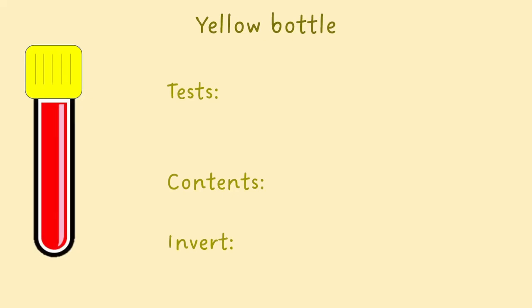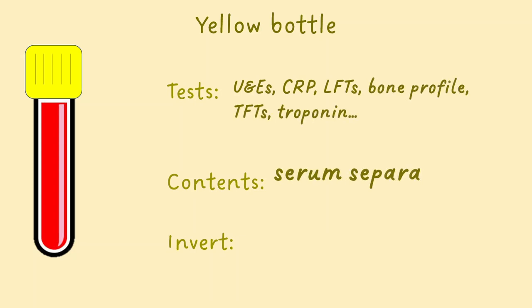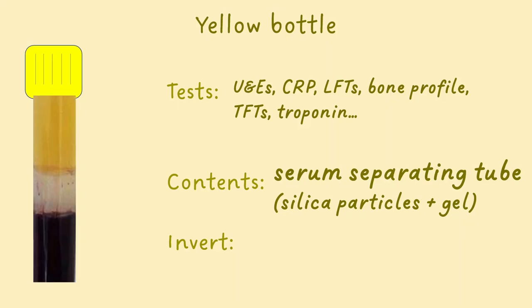Next is the yellow bottle. This is used to send blood for a wide range of tests. It's a serum separating tube containing silica particles and a serum separating gel. The contents of the tube will cause the blood cells to come together, allowing the serum to be separated by centrifuge in the lab.